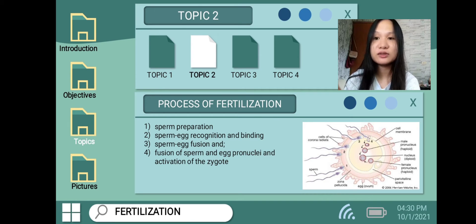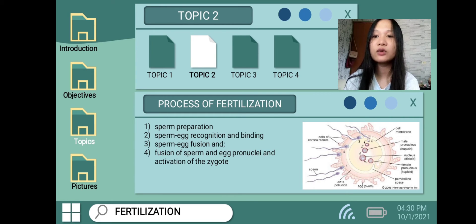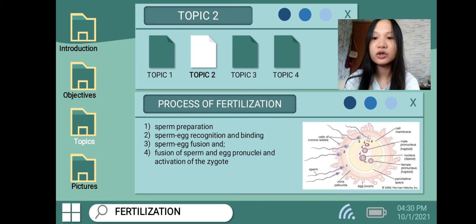The fourth step is the fusion of sperm and egg pronuclei and activation of the zygote. The immediate events after fertilization include the egg's effort to prevent polyspermy. Polyspermy refers to the fertilization of an egg by more than one sperm, resulting in zygotes with greater than a diploid amount of DNA, which causes early embryonic defects. After sperm-egg fusion, the egg mounts a critical reaction to prevent polyspermy. In all eggs, residing just under the plasma membrane, there are membrane-bound vesicles known as cortical granules.